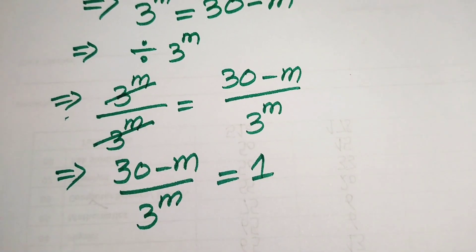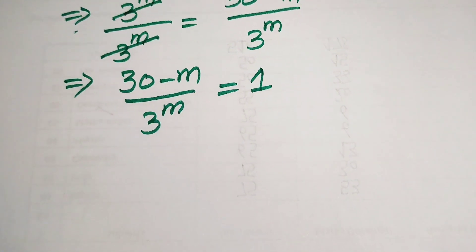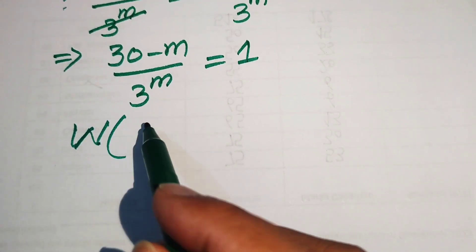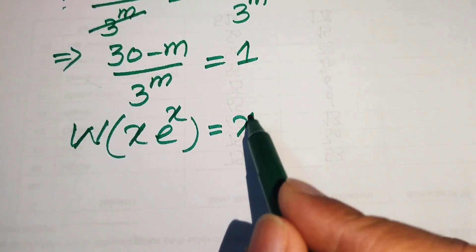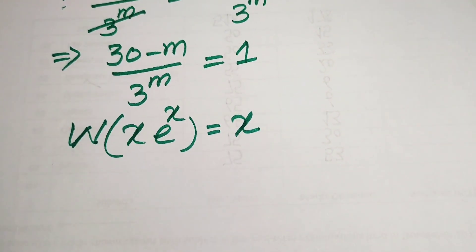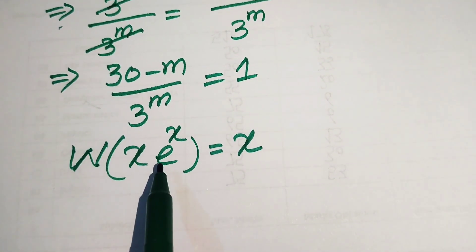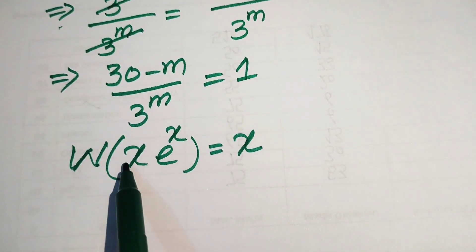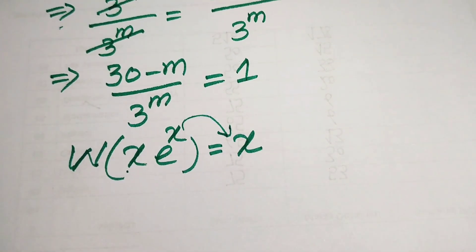We write the right hand side first and left hand side after that. Now we use the Lambert W function to find the value of m. The Lambert W function is defined as: W of x·eˣ equals x. This is the standard form, and its output is the exponent of e.